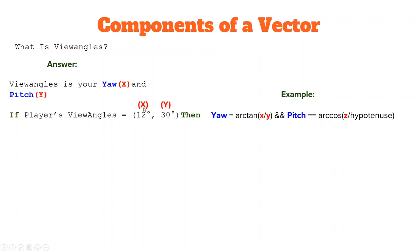Then yaw is equal to the inverse tangent of x divided by y, and pitch is equal to the inverse cosine of z divided by hypotenuse, which is our magnitude of our vector.